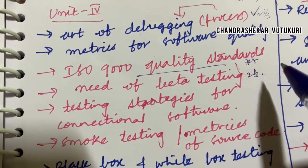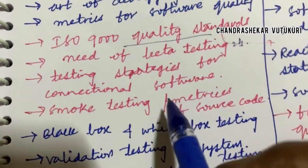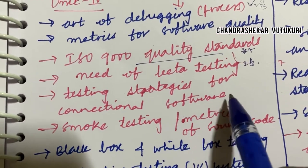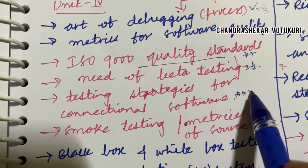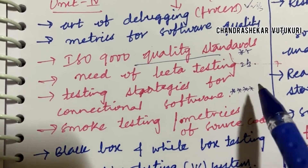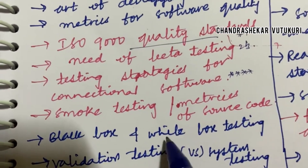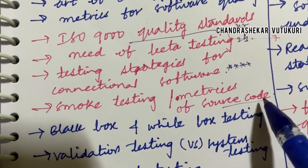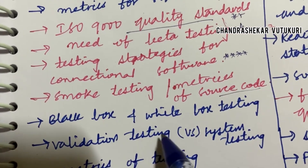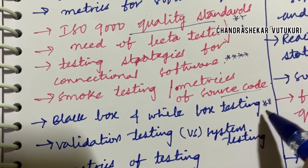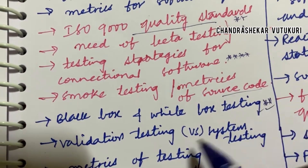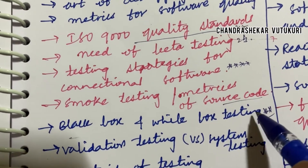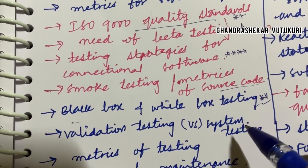Need of beta testing may be a two or three mark question. Testing strategies for conventional software may be a top most five-mark question. Smoke testing, metrics of source code, and black box versus white box testing and their differences may be a top most question. Till here you can expect 8A as well as 8B.